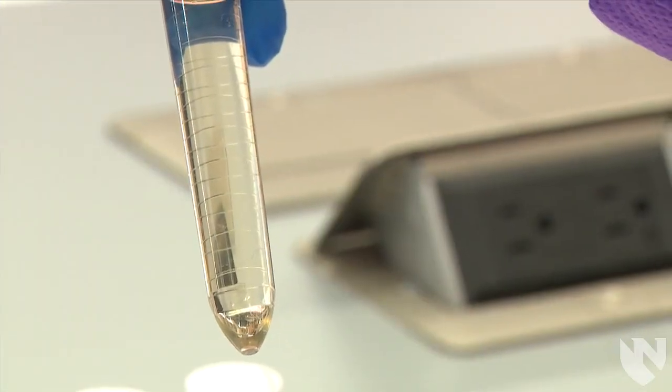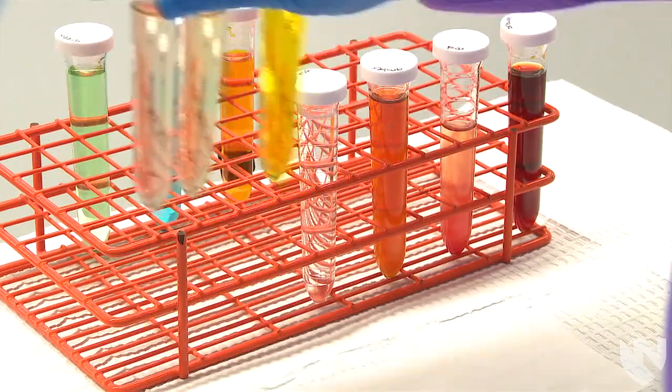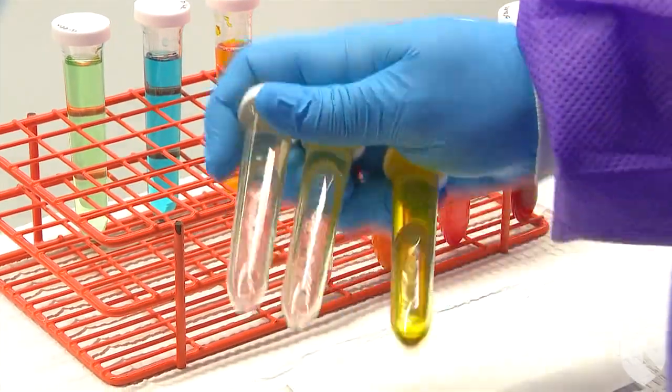The specimen for this test is fresh, uncentrifuged urine in a conical test tube. We will begin by inverting the urine several times to mix it.